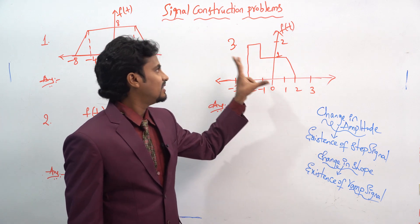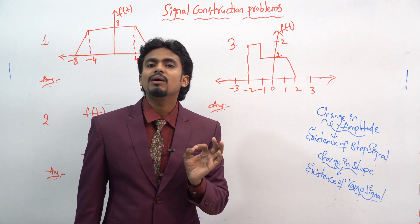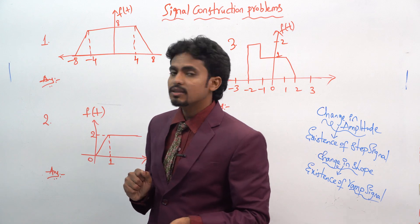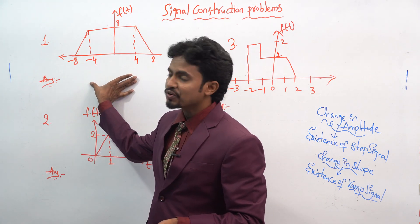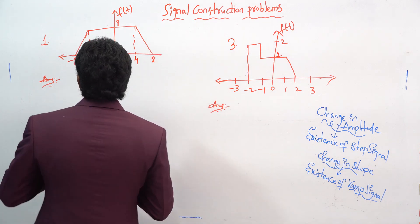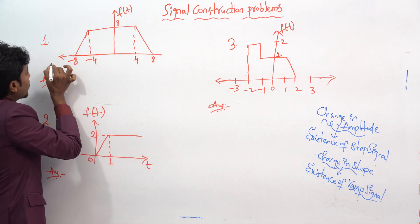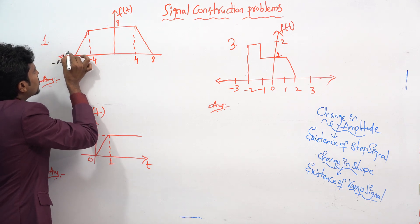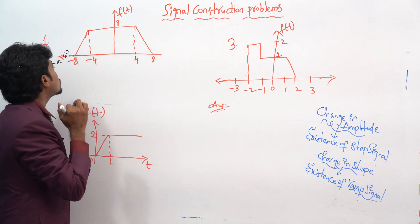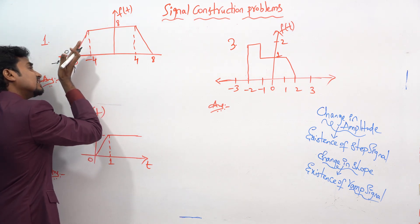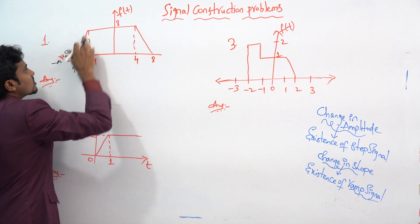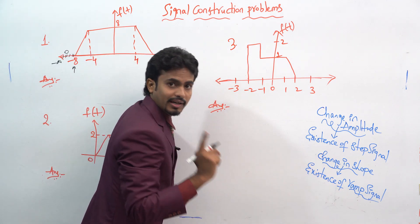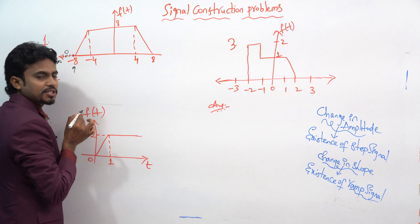We have to apply these two points to the plot. Our target is to write the mathematical expression for this plot. In the first question, from minus infinity to minus 8, there is no signal present — that means zero. Whenever you see minus 8, there is a sudden change in the slope, so there will be an existence of a ramp signal.